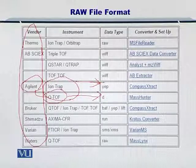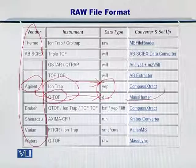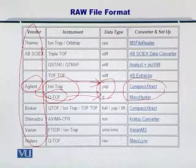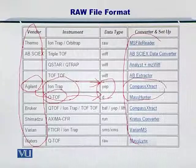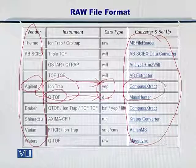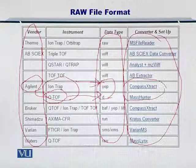For instance, the Agilent .d and YEP files can be converted into MZXML or MZML files by using these two tools. Similarly, you can use other tools mentioned in this column to convert these raw files into standard data formats.